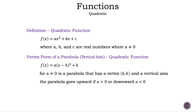Second, we have the vertex form, where we have f of x is equal to a times the quantity of x minus h squared plus k. For a cannot equal 0, it is a parabola that has a vertex hk and a vertical axis. The parabola goes upward if a is greater than 0, or downward if a is less than 0.